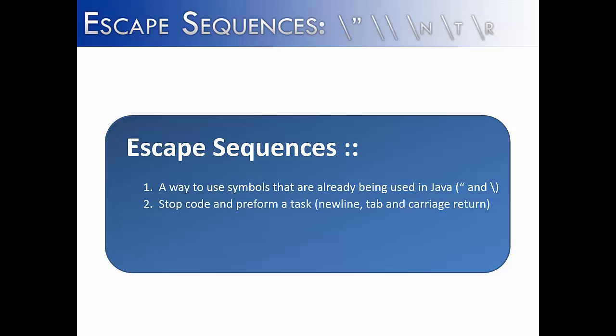Another use for escape sequences are to stop code and perform a task. Like new line, tab, and carriage return. New line we did with backslash n. Tab we did with backslash t. And carriage return we did with backslash r. Carriage return is just when you're starting over at the beginning of the line or the beginning of the string.